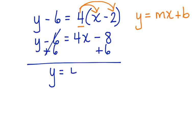y equals 4x minus 2. Now the equation is written into slope-intercept form, and our work is complete. Let's take a look at another one.